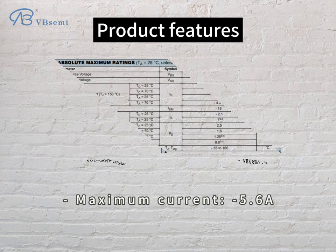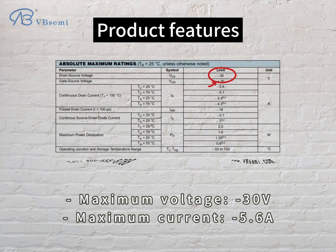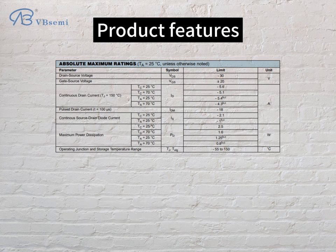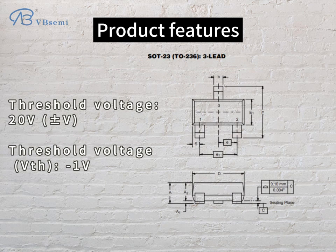Product features: Maximum Voltage -30V, Maximum Current 5.6A, Gate-Source Voltage 20V, Threshold Voltage VTH: -1V.